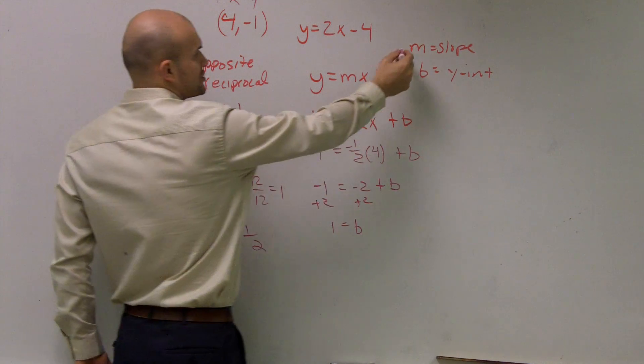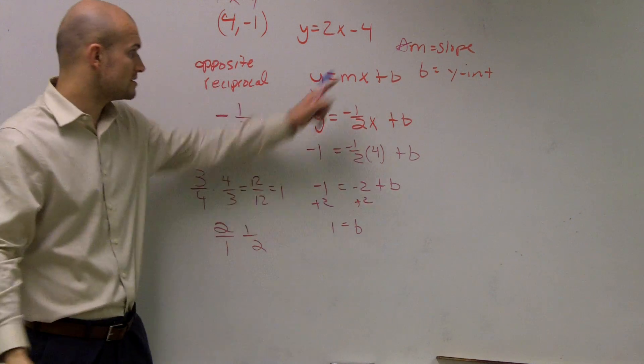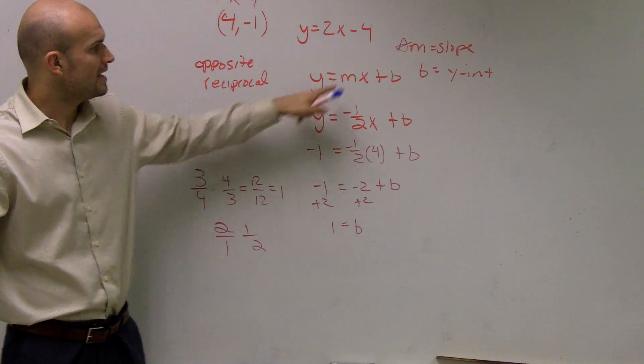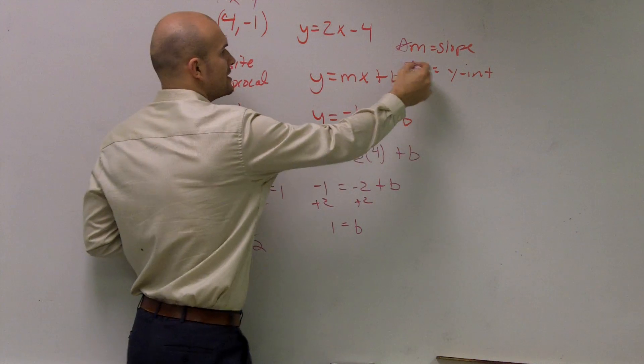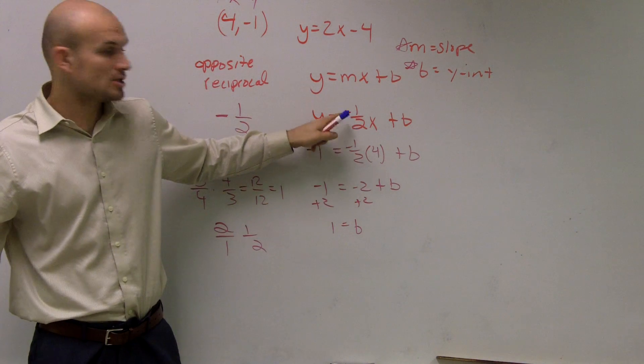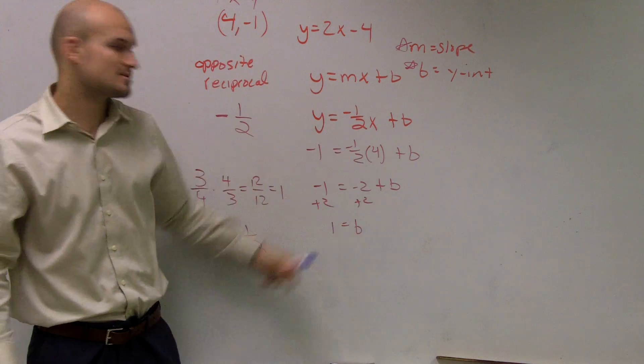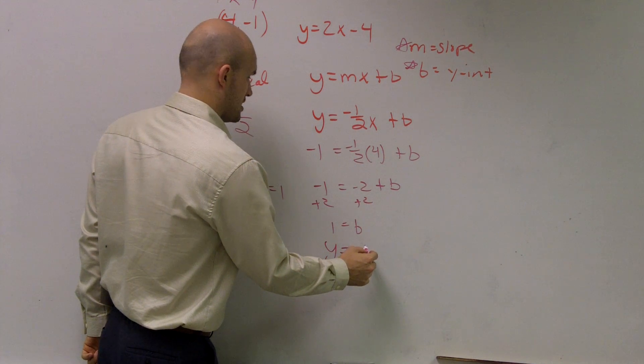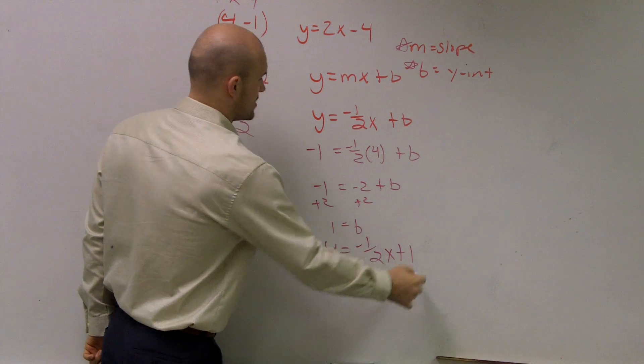So now, I have determined what my slope was by using my original equation and finding the opposite reciprocal. I determined what my y-intercept was by taking that new slope and plugging in my coordinate points. Therefore, my equation is y equals -1/2 x plus 1.